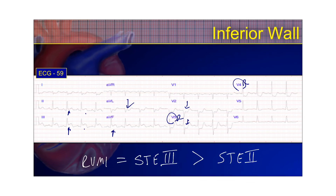The problem with right ventricular infarctions is that because of the reduced cardiac output, the right side of the heart becomes very preload dependent. If you give any nitrates, reducing preload, you can cause severe hypotension. If that happens inadvertently, make sure you give fluids — they respond very well because you're increasing preload again. So if you give nitrates to a right ventricular infarction and they become hypotensive, administer fluids rapidly, and also assess for signs of cardiogenic shock and pulmonary congestion.